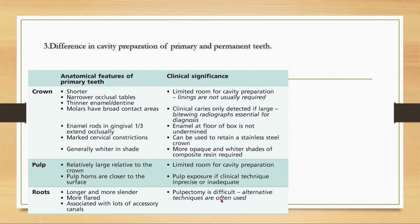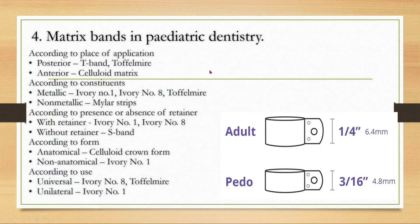Matrix bands in pediatric dentistry have many classifications: posterior and anterior, metallic and non-metallic, with retainer and without retainer, anatomical and non-anatomical, universal and unilateral, and adult versus pedo sizes.